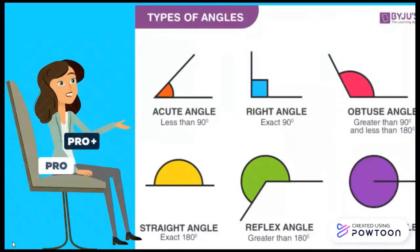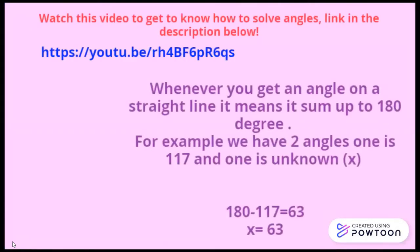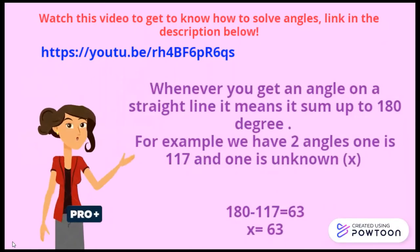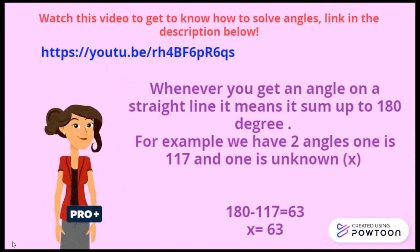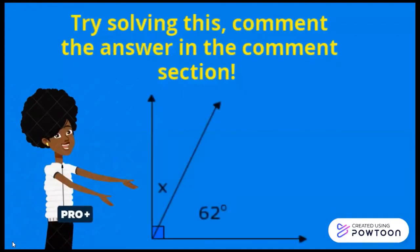These are the six types of angles you can see. Whenever you get an angle on a straight line, it means it sums up to 180 degrees. For example, we have 117 and one is an unknown angle. You will minus 117 from 180 and you will get x = 63 degrees. Try solving this angle in the comment section down below.